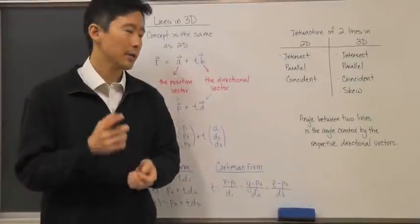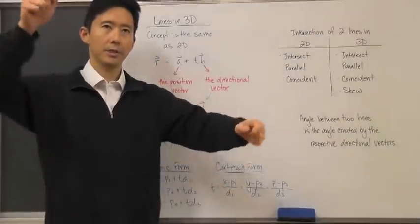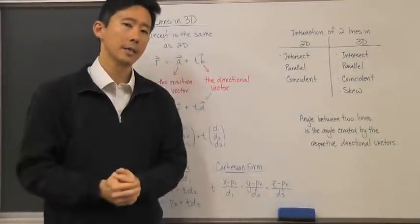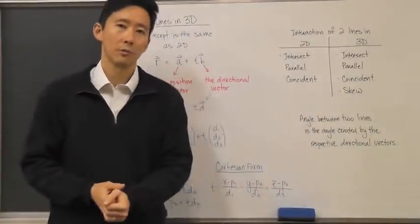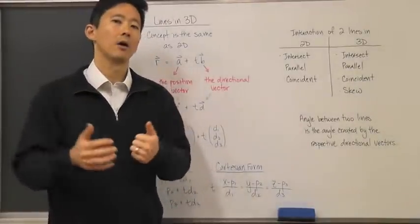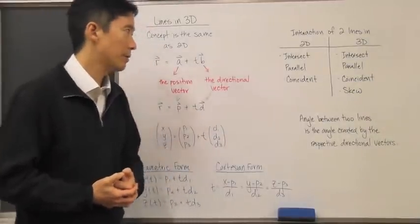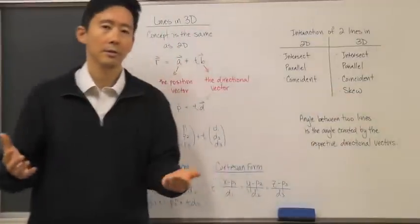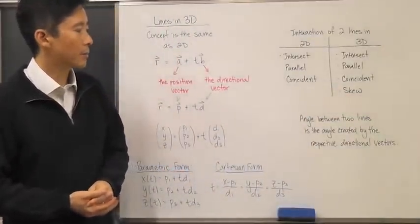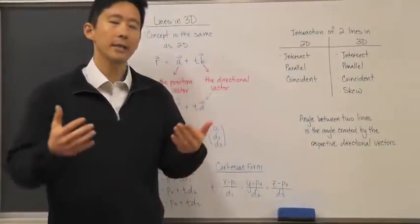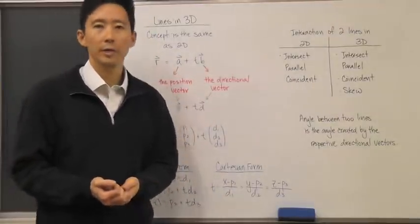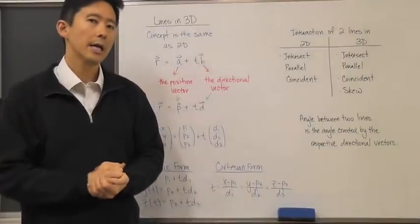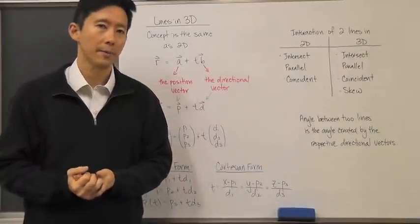In three dimensions there is one additional case: a line that is not parallel but still doesn't intersect the other. Think of two pencils pointing in different directions — they're not parallel, not coincident, and don't intersect. This situation is called skew lines. When finding the angle between two skew lines, we use the angle created by their respective directional vectors placed in standard position, and we define that as the angle by which the lines interact.